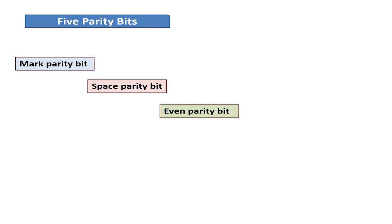Five different parity bits can be used. The marked parity bit is always set at logical 1. The spaced parity bit is always set at logical 0. The even parity bit is set to logical 1 by counting the number of bits in the word and determining if the result is even.